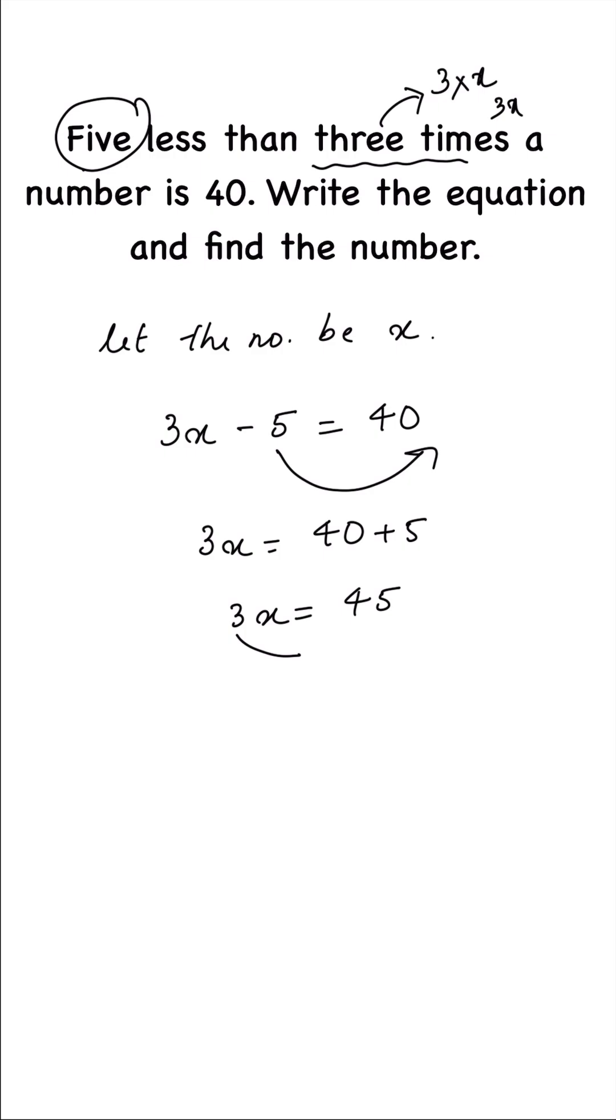Therefore, we'll transpose three to the other side. You can transpose it or divide both sides by three. When you transpose, the three will go to the denominator. I'll show you by dividing on both sides: 3x divided by 3 and on the right side, 45 divided by 3.